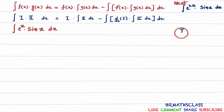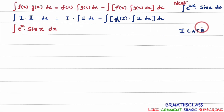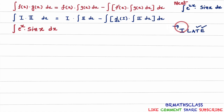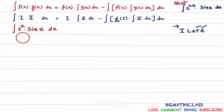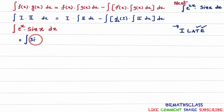So we will check the ILATE rule here. ILATE: e power x represents an exponential function — mark E. Sin x is a trigonometric function — mark T. When you observe from left to right, trigonometric function comes first. So we treat the trigonometric function as the first function and the exponential function as the second function. Therefore, sin x is the first function and e power x is the second function. I will rewrite the integral as: integral of sin x into e power x dx.